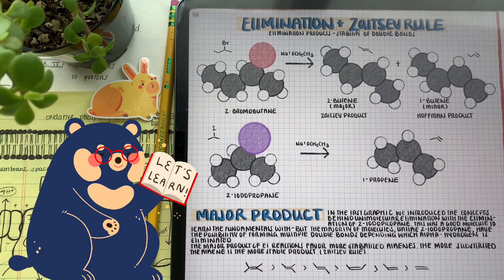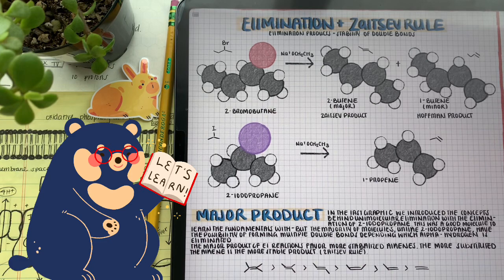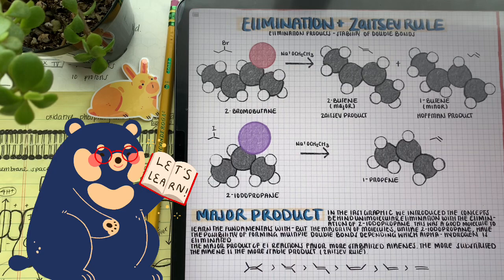We can see the increase of stability of the double bond as we put more and more alkyl chains on the double bond carbons, hence substituting the double bond.